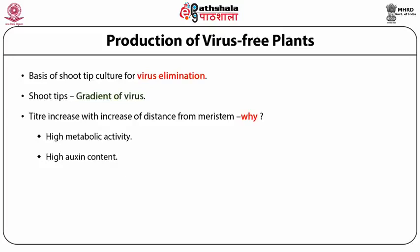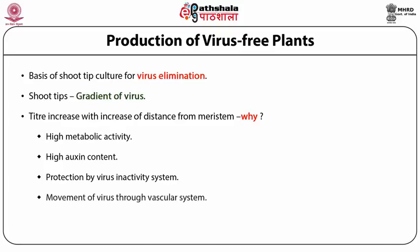There seems to be a virus inactivity system present in the shoot tip. In plants, the virus moves through the vascular system, and the shoot tip does not have the vascular system — the vascular system terminates well before the meristem. In tissues where there is no vascular tissue, the virus moves through plasmodesmata from one cell to the other, but this method is extremely slow. Therefore, the migration of the virus cannot keep pace with the growth of the shoot tip.